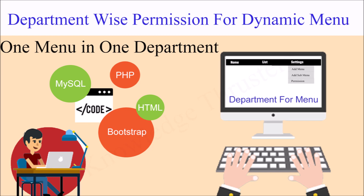Let me quickly summarize what I've done. First, I defined which department each submenu belongs to. After that, I displayed menus according to the logged-in user's department — only those menus are shown. In my next video I'll show how to define menus in multiple departments. I hope this video was helpful. Thank you for watching — please like, share, and subscribe to my channel.